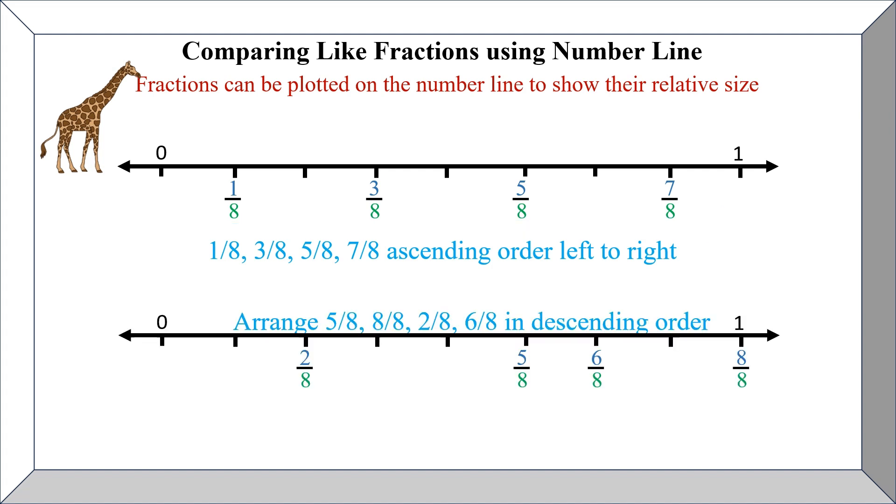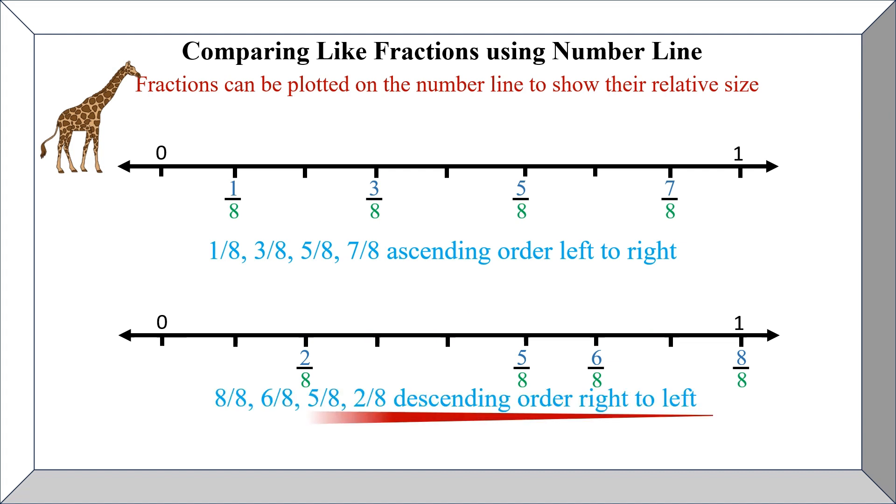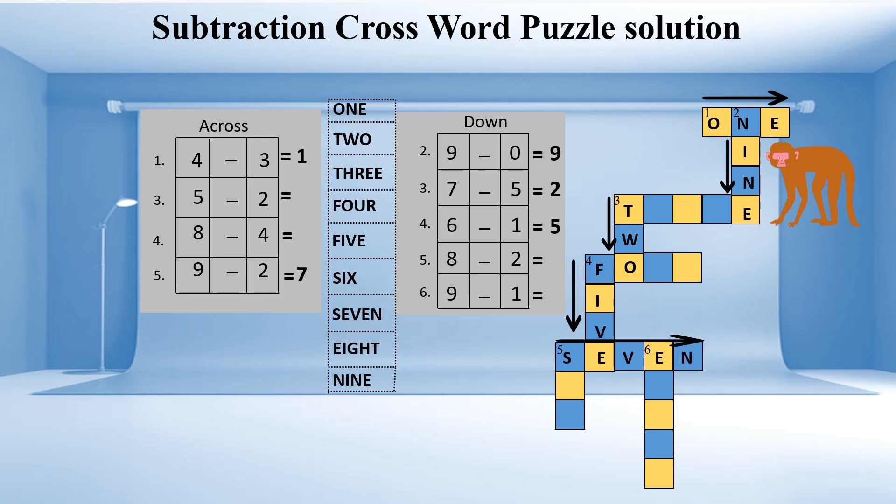Next question is arrange 5 by 8, 8 by 8, 2 by 8, and 6 by 8 in descending order. So again you plot all these points on the number line and you can visualize them and write it as 8 by 8, 6 by 8, 5 by 8, 2 by 8 are in descending order right to left.